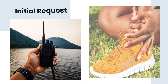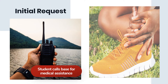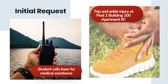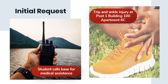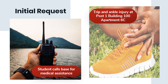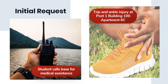Initial Request: a student or witness in the vicinity of the student needing assistance calls the public safety office, explaining that they need help. The base dispatcher asks for more information and the aided explains that she has fallen and hurt her ankle. The dispatcher takes her information and informs her that help is on the way.